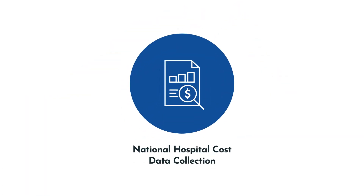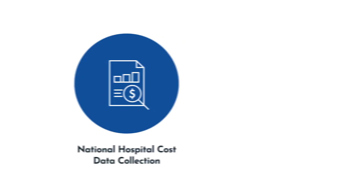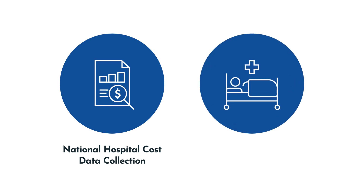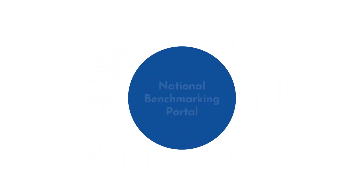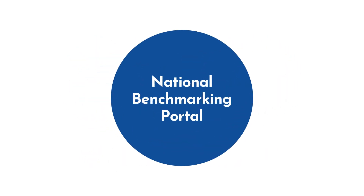Cost data refers to the cost accrued during the delivery of an episode of patient care, categorised according to the different resources used during the episode. Activity data refers to the type and volume of the episodes of care. The National Benchmarking Portal presents insights from the combination of these cost and activity data sets.